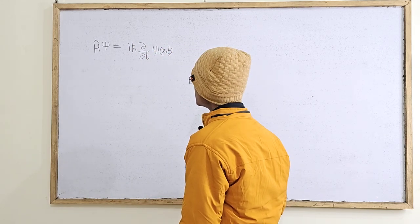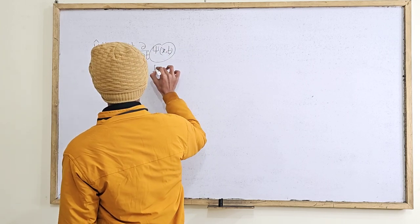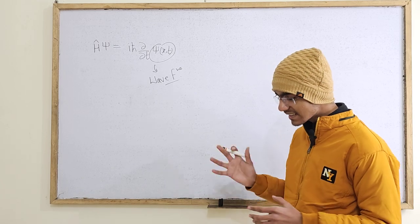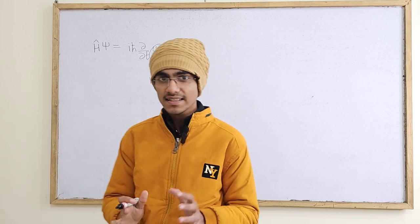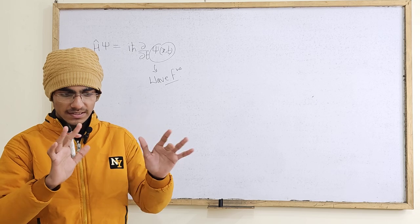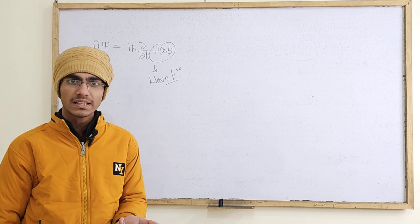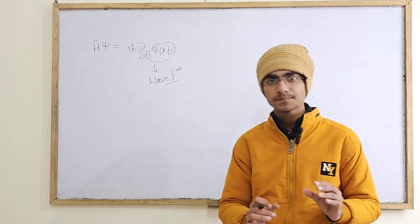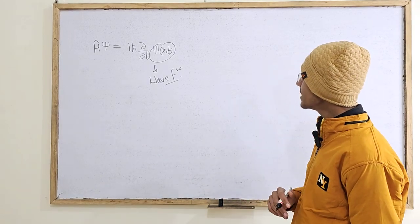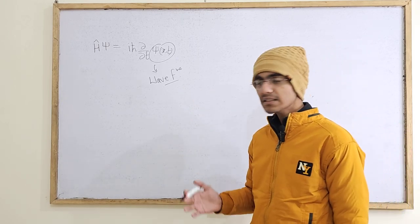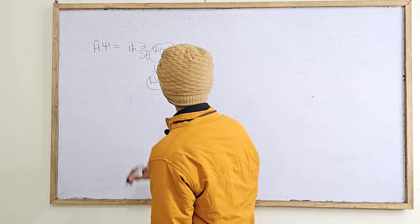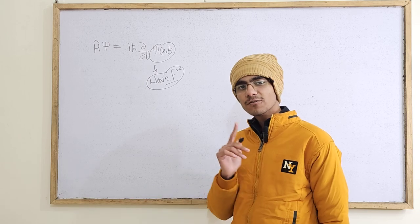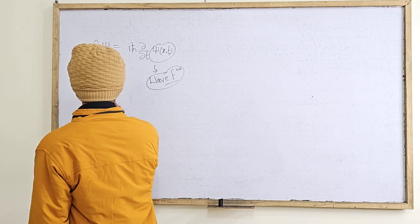Yaha se jo wave function ka introduction hua, when Schrödinger was asking what exactly is this variable, he said he didn't know. Schrödinger wanted to solve quantum problems by forming a wave equation — he believed particles behave as waves, so they need a wave equation. He developed his wave equation — that is Schrödinger's equation — and he had to introduce ψ as a dynamical variable called the wave function. When he was asking about it, he said he didn't know what this variable is.